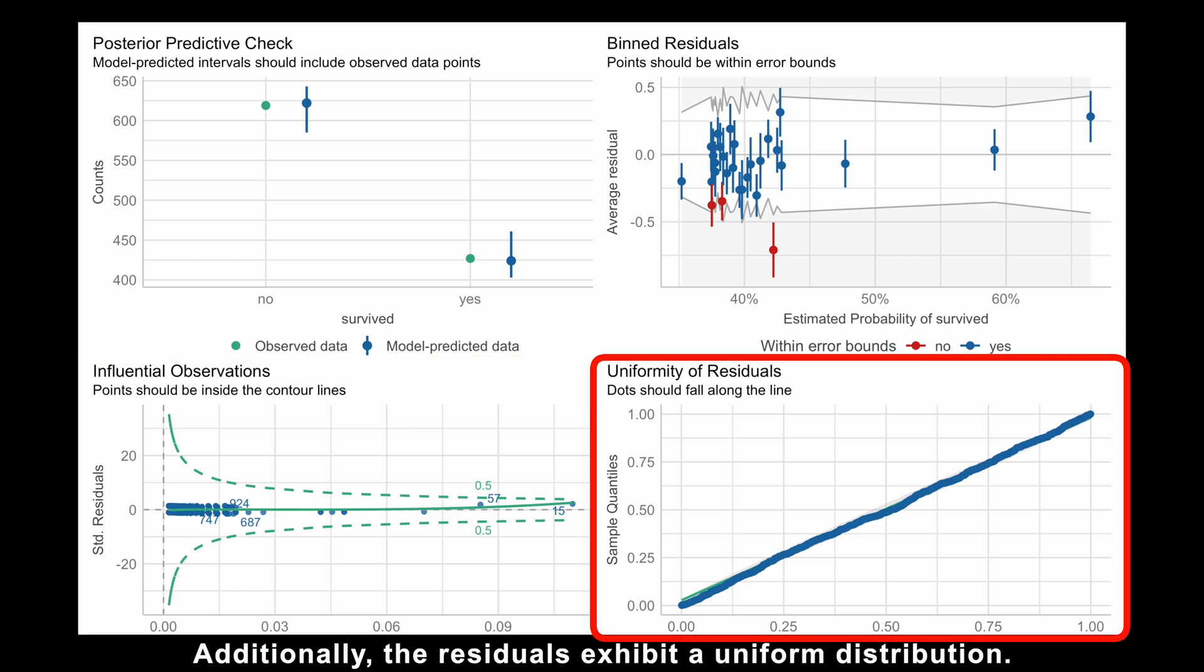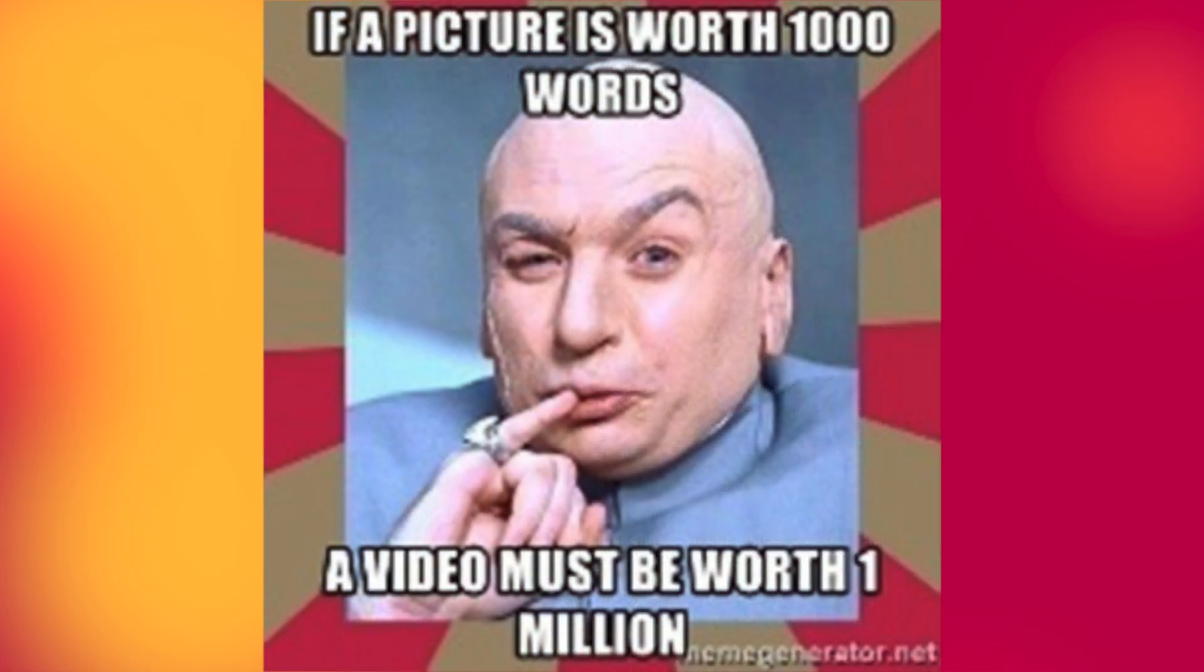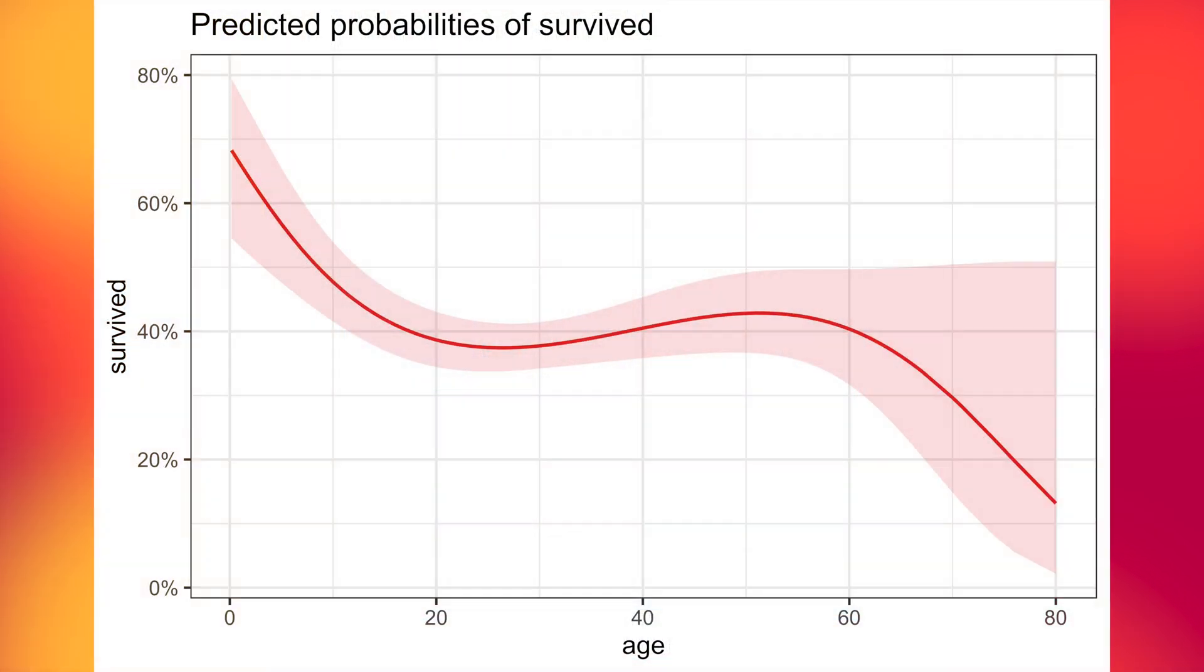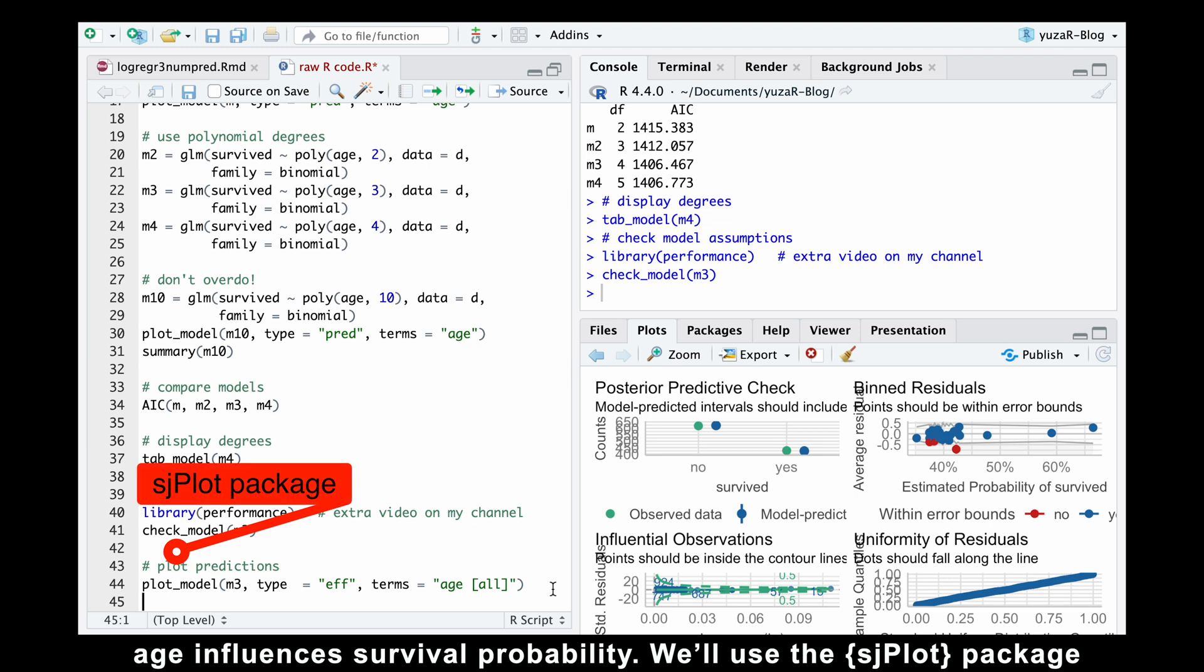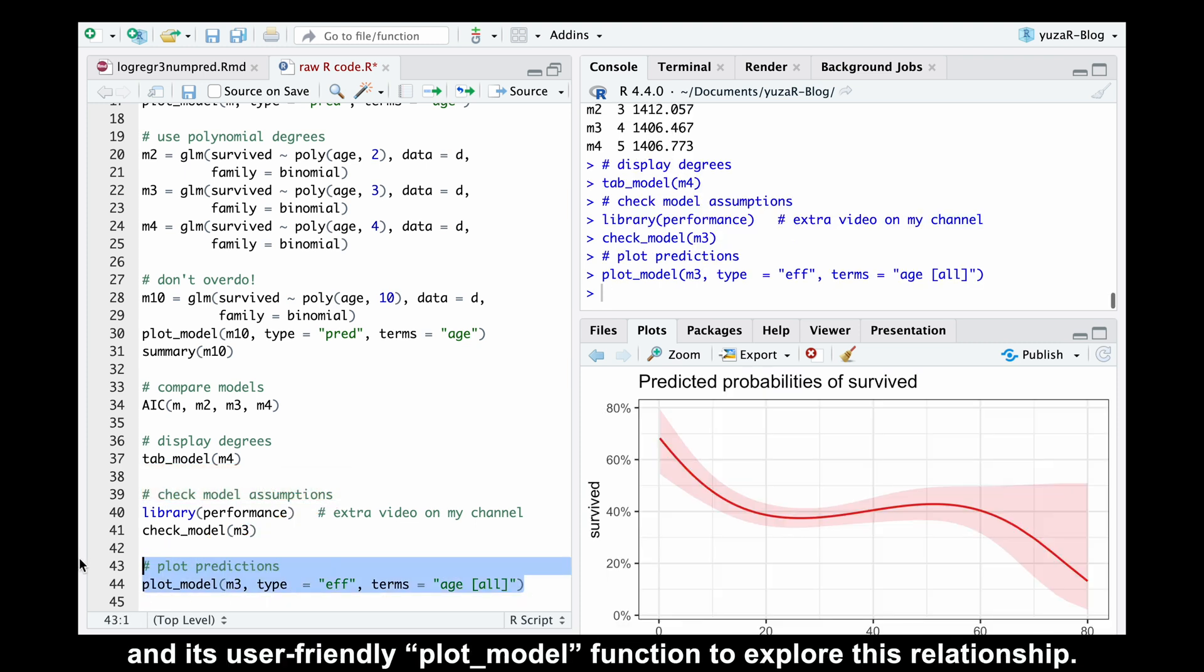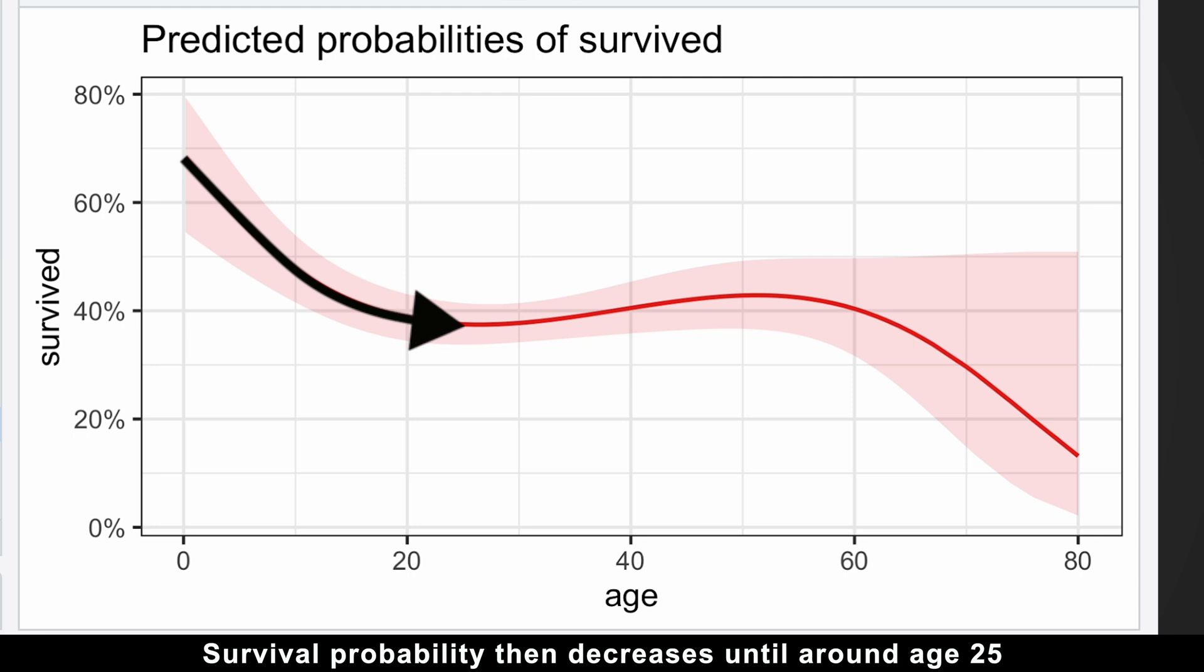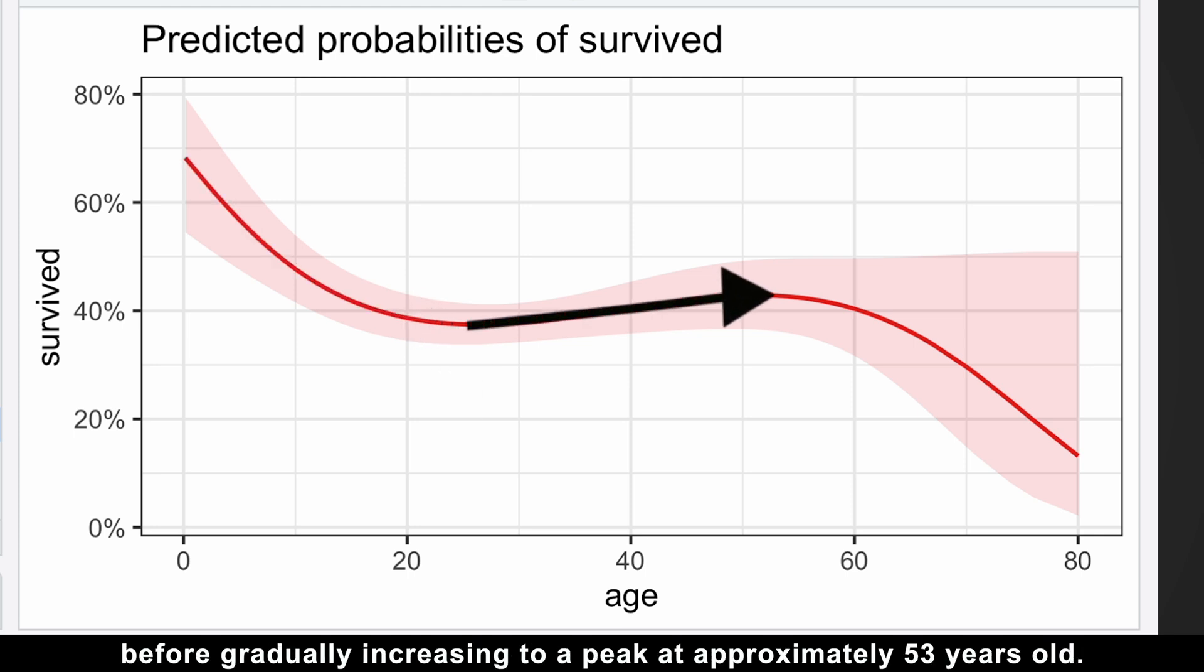Additionally, the residuals exhibit a uniform distribution. So the model seems to be okay and we are good to go. And since a picture is worth a thousand words, let's visualize how age influences survival probability. We'll use the sjplot package and its user-friendly plot_model function to explore this relationship.